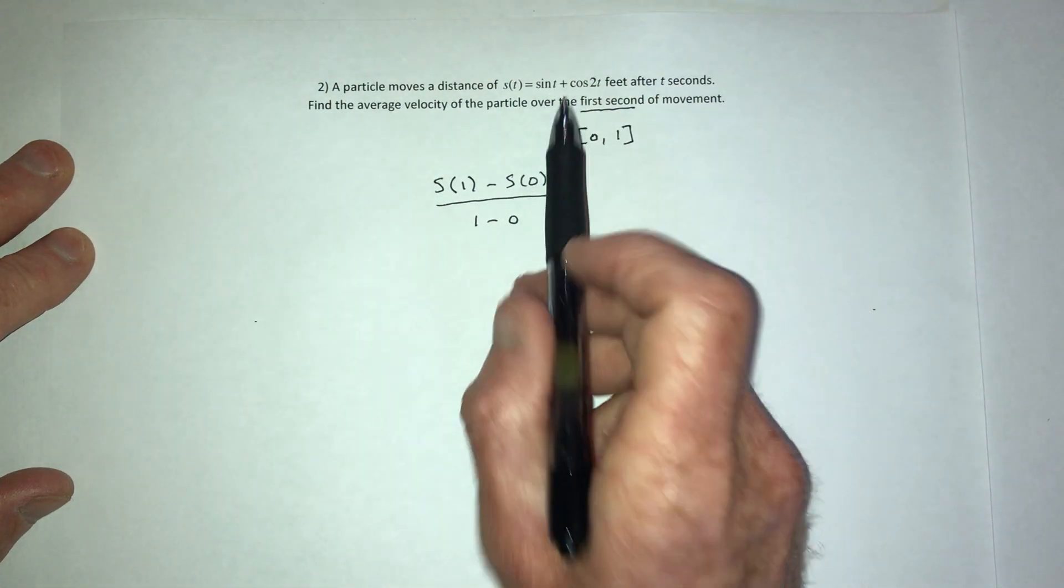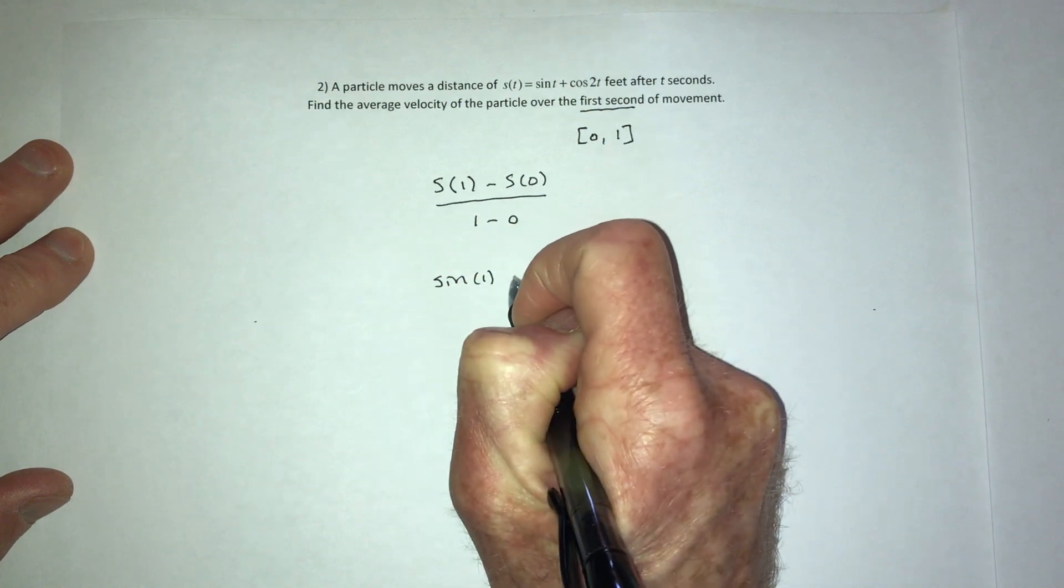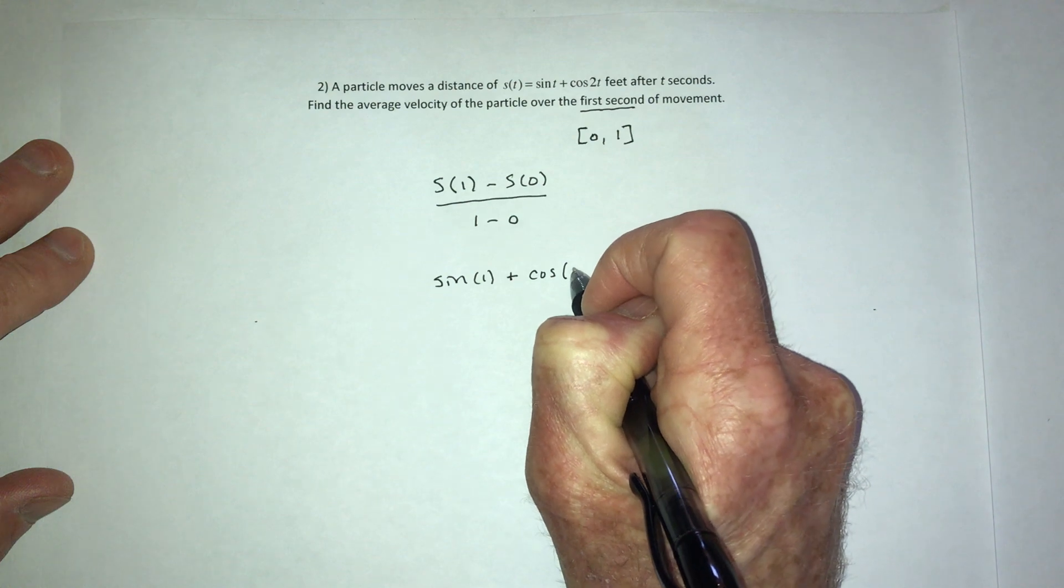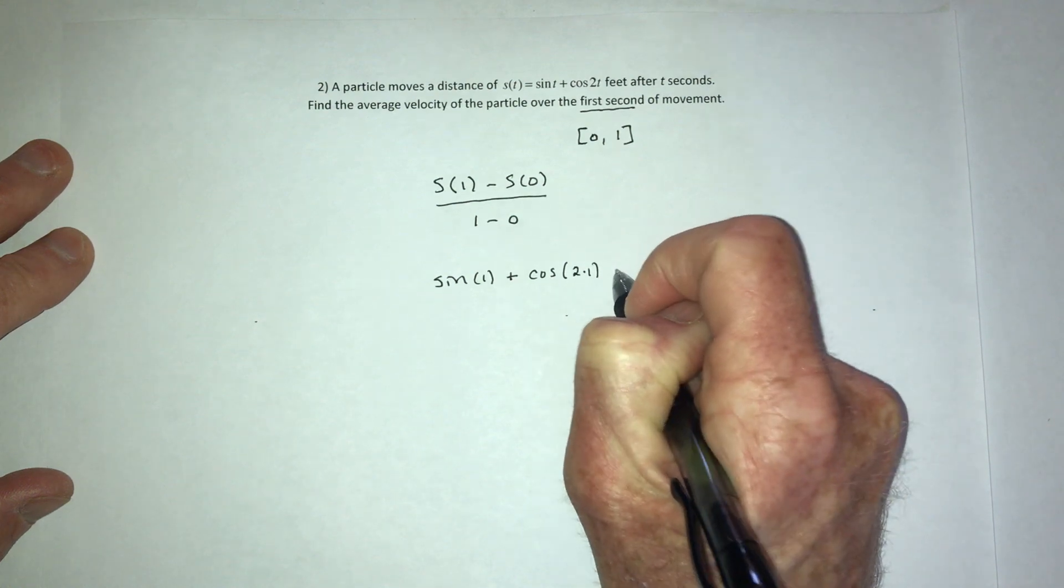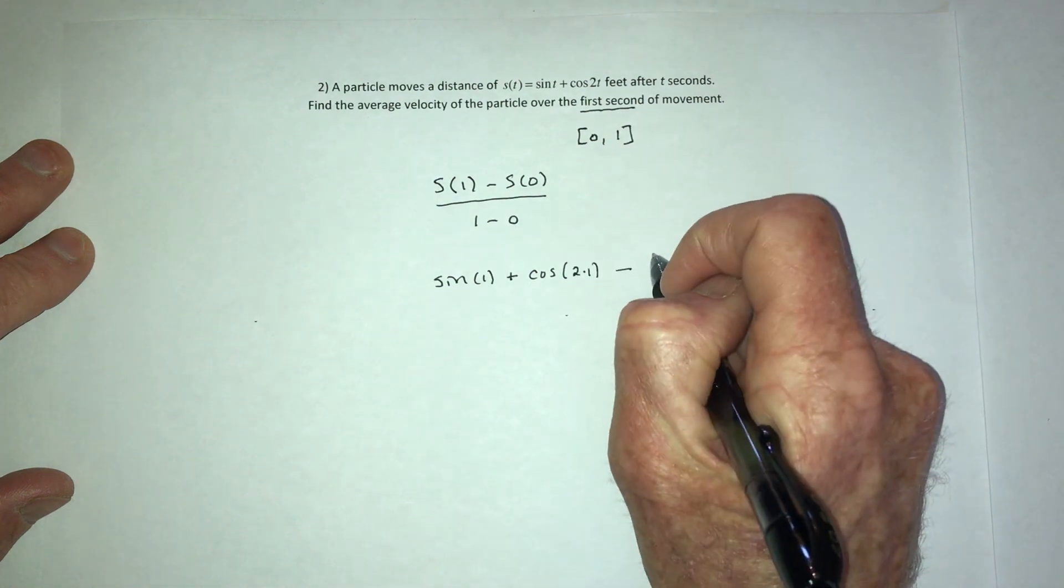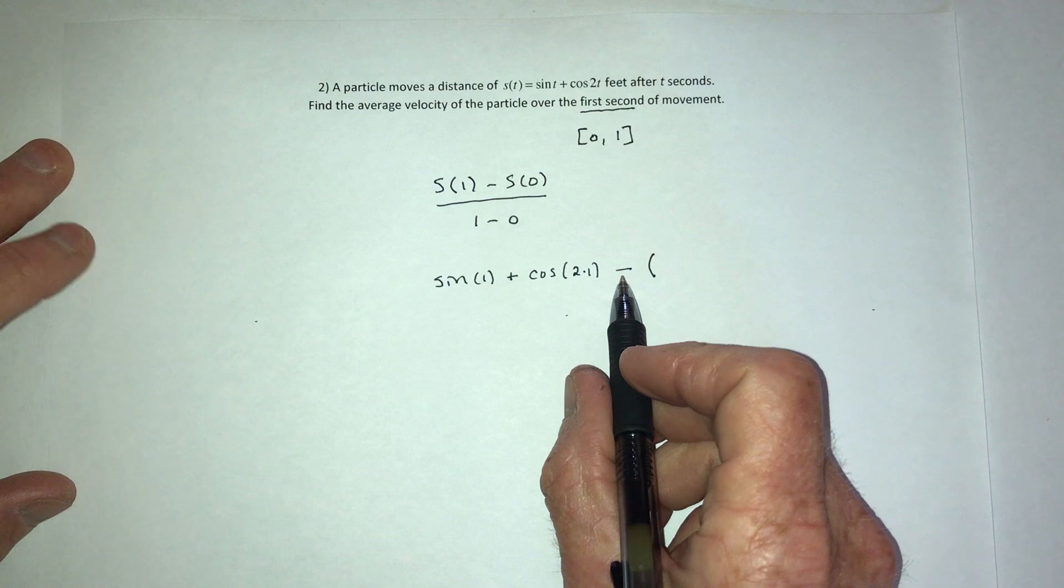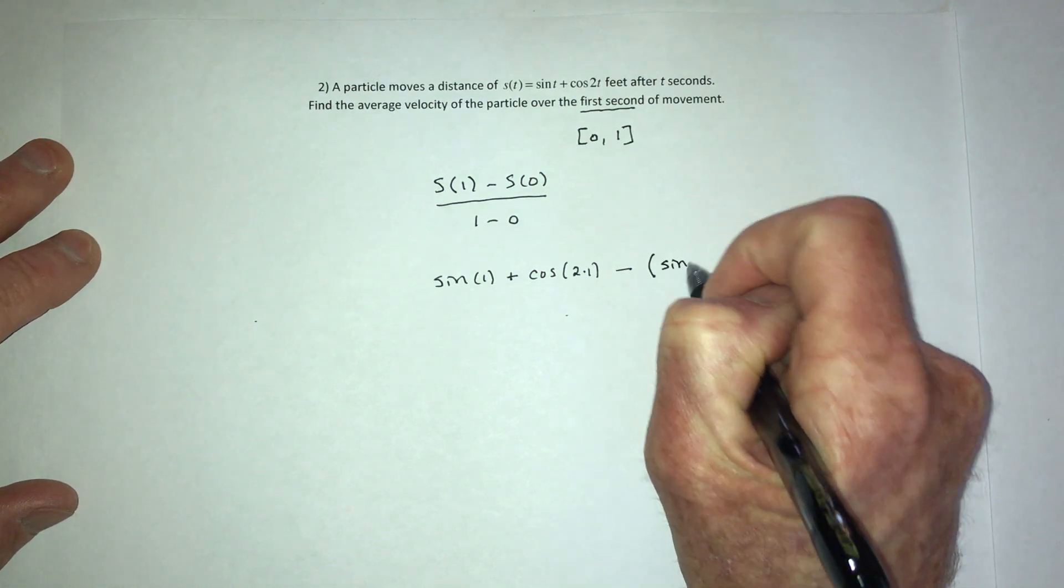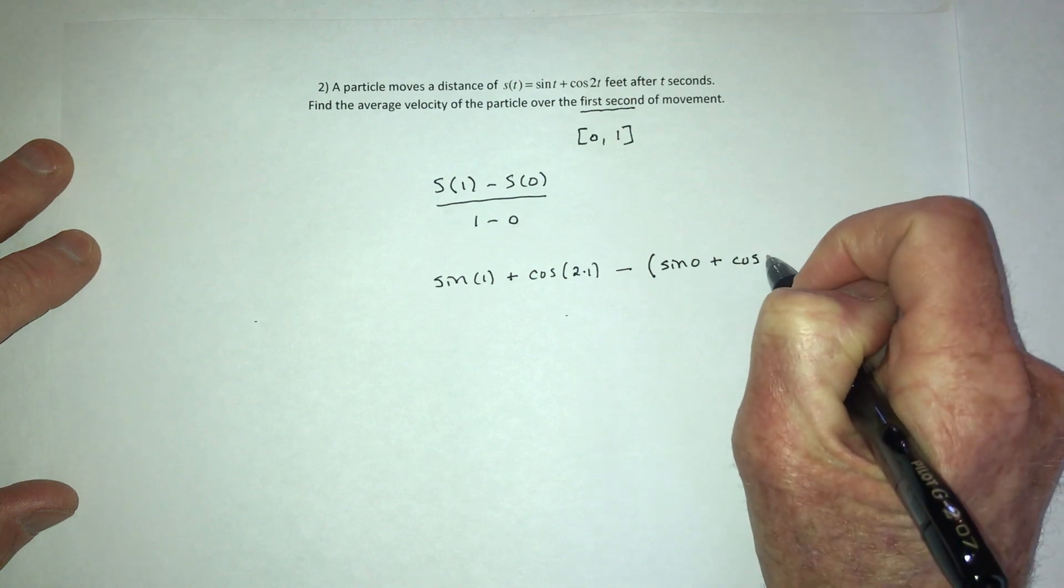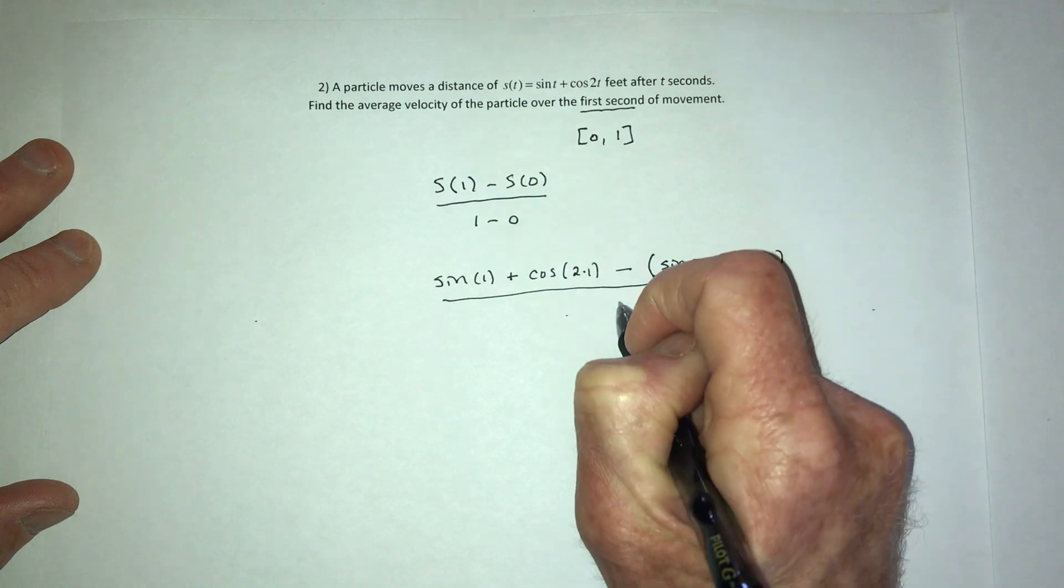So then substitute a one into the function, so that's going to be sine of one plus cosine of two times one. And then do this part and it should be in parentheses because the negative, the subtracting, applies to the whole thing. So then it's going to be sine of zero plus cosine of two times zero, and then the whole thing is divided by one.